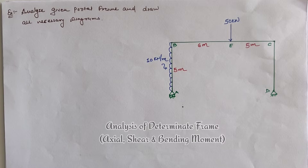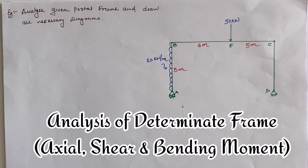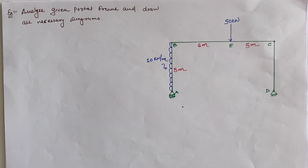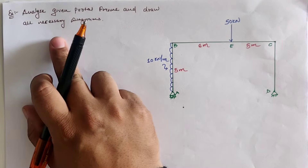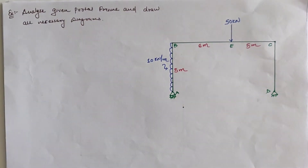Hello friends, today we are going to analyze the given portal frame, which is a determinate frame, using the three equilibrium conditions: sigma H = 0, sigma V = 0, and sigma moment at any location = 0. We have to draw the axial thrust diagram, shear force diagram, and bending moment diagram.